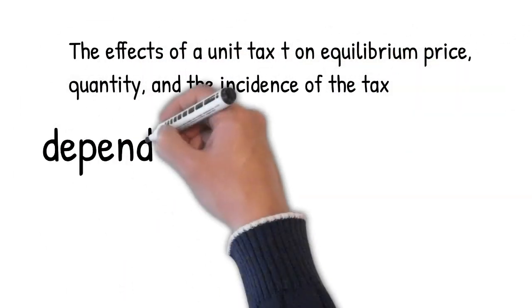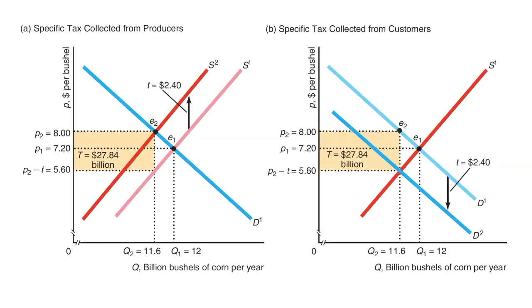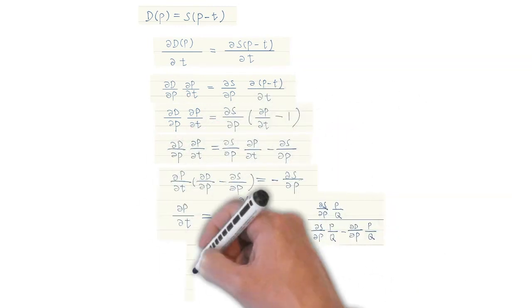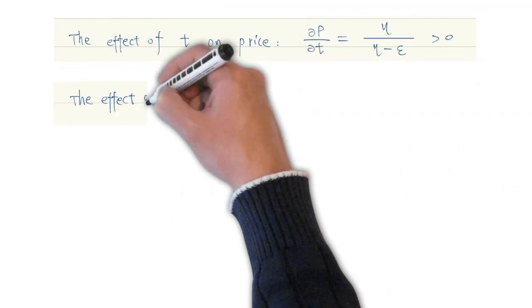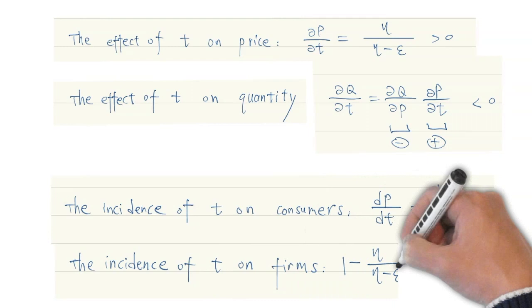The effects of a unit tax on equilibrium price, quantity and the incidence of the tax depend on the demand and supply elasticities. For given supply elasticity, the more elastic the demand, the less the share of the tax that falls on consumers. The incidence is not affected by whether the tax is collected from consumers or producers. The incidence of a tax on consumers is a function of the supply elasticity eta and demand elasticity epsilon. It can be proved that the effect of the unit tax on equilibrium price is positive, the effect of the tax on the equilibrium quantity is negative.